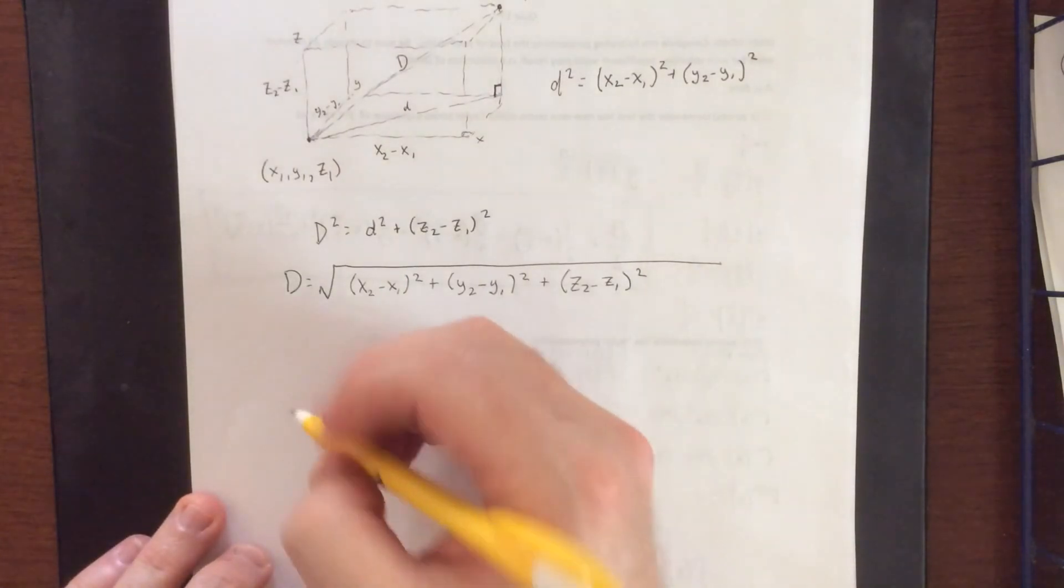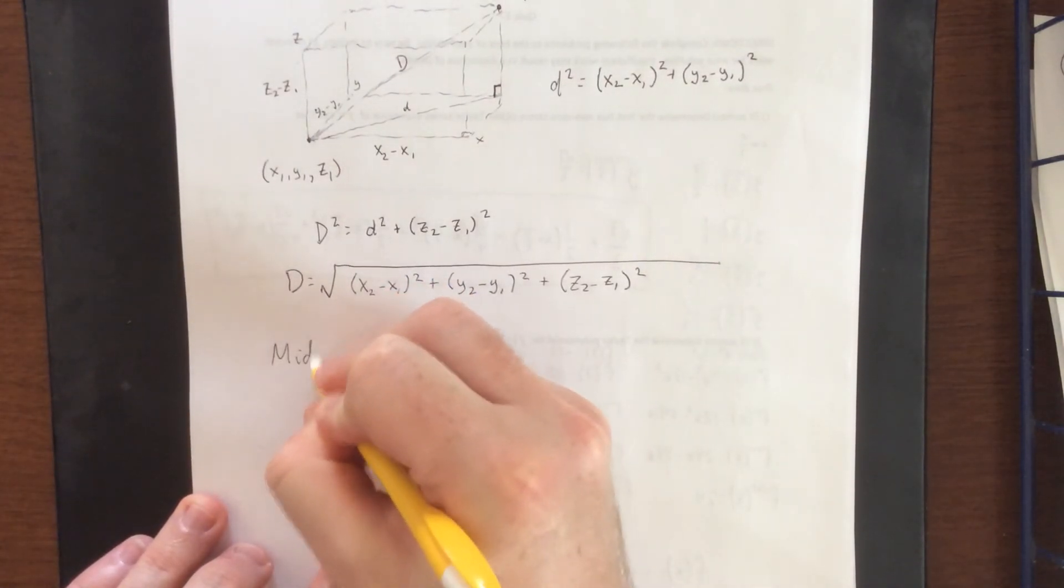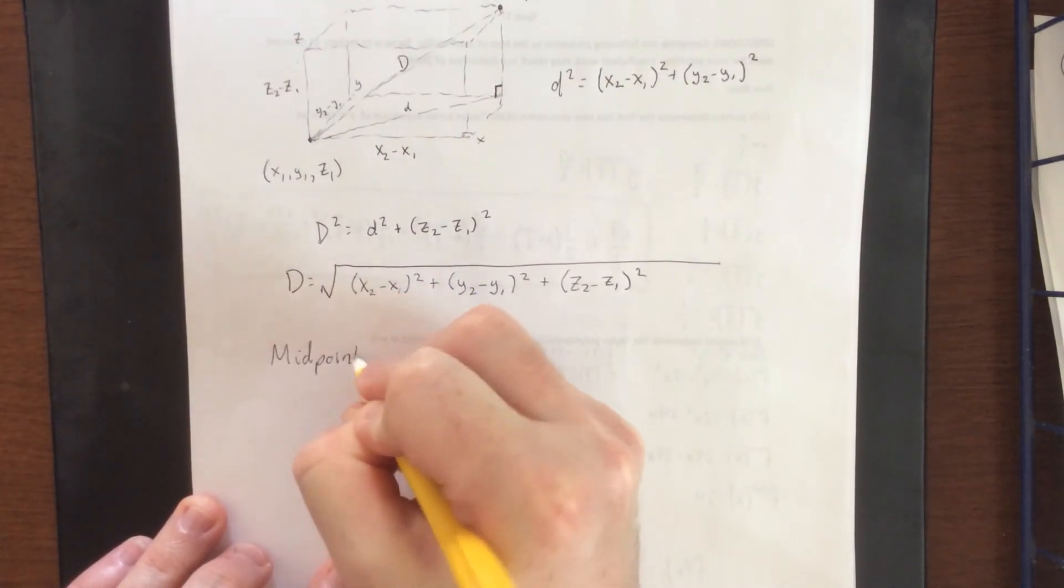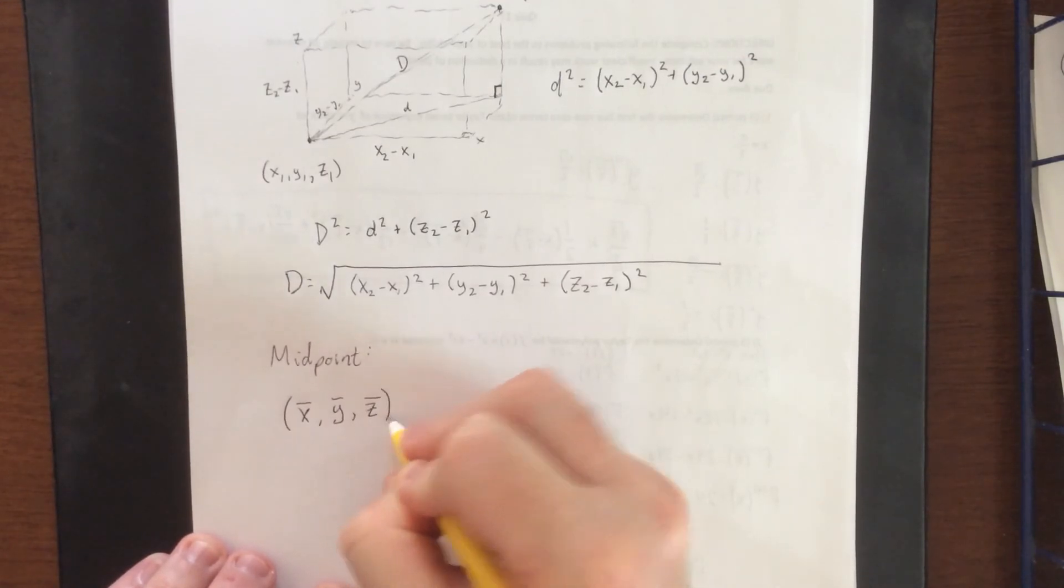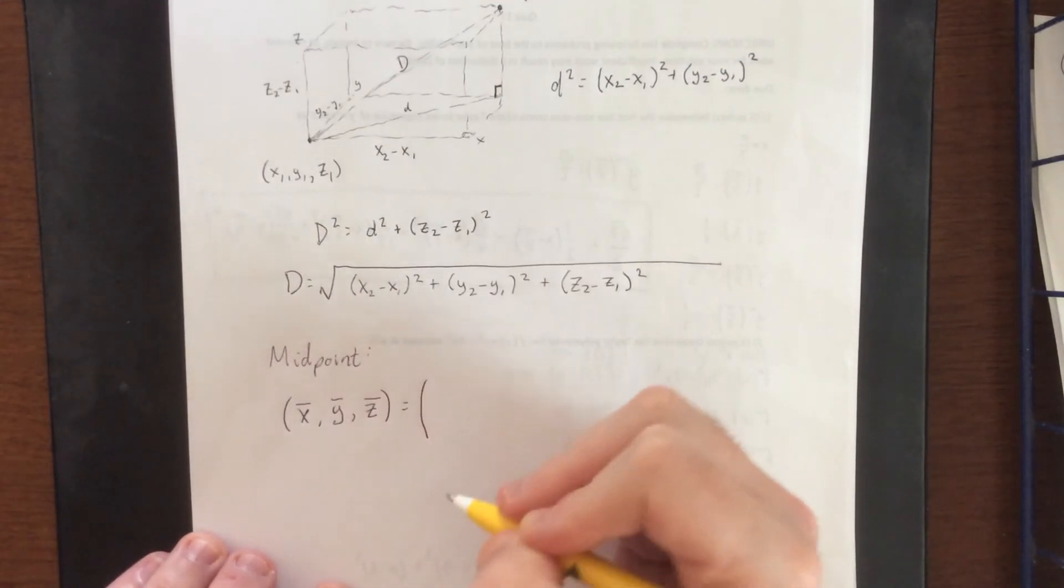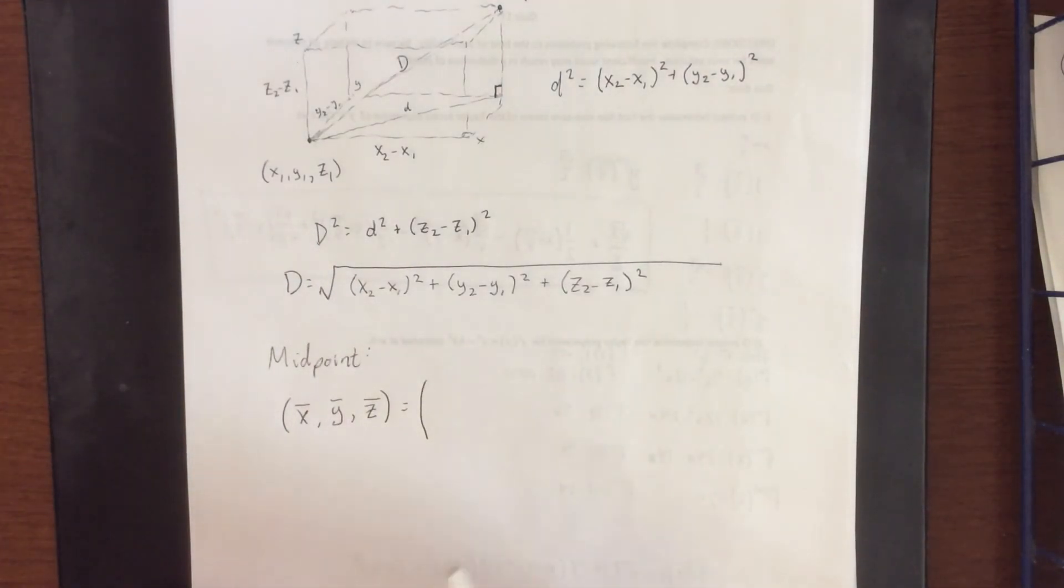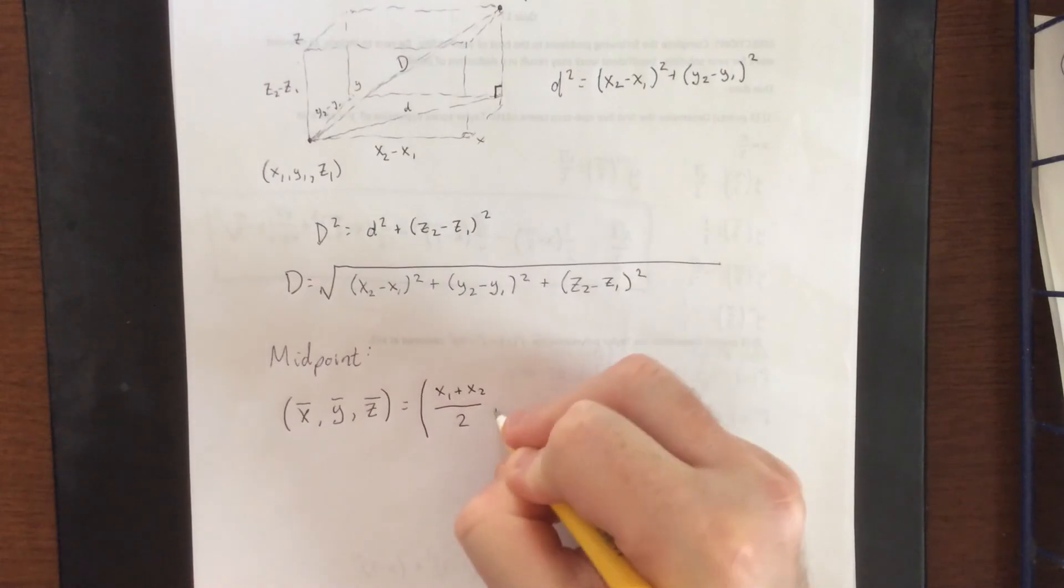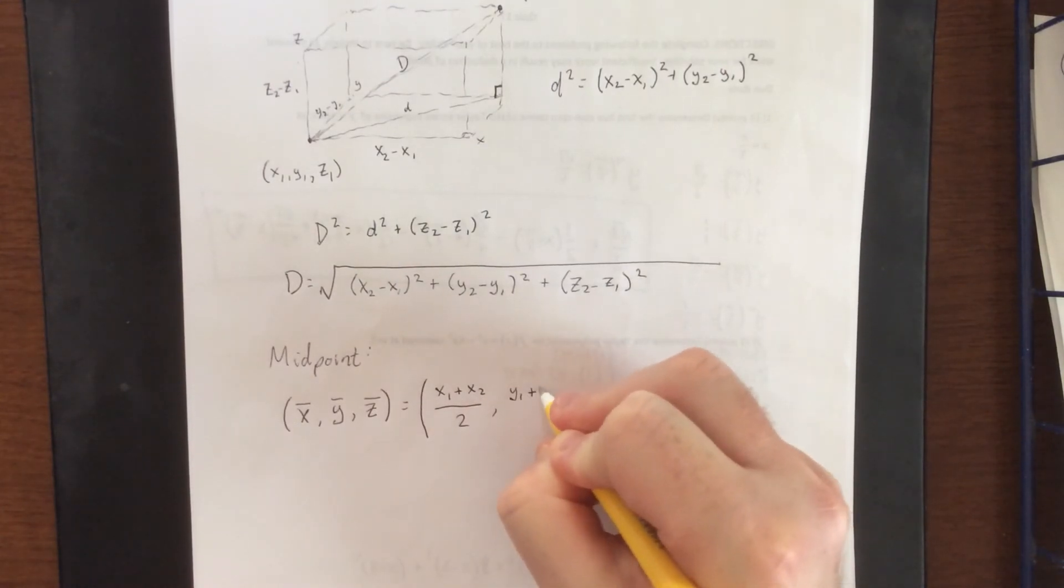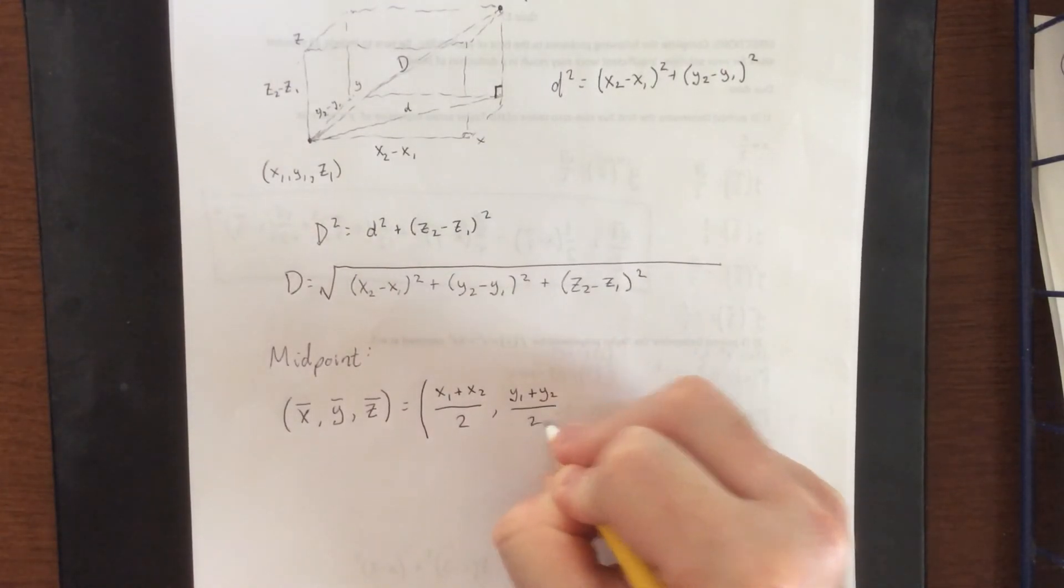Now that's our distance formula. For the midpoint formula, it works very similarly in the sense that we're simply going to do to z what we would do to x and y in two dimensions. The way we find a midpoint is we add the two numbers up and divide by two. A midpoint is like taking the average of these two points.